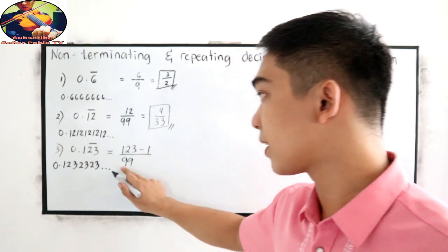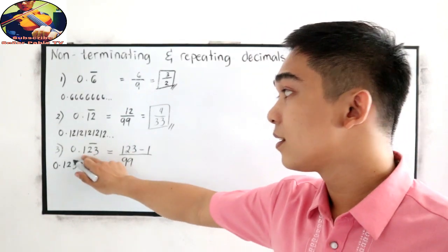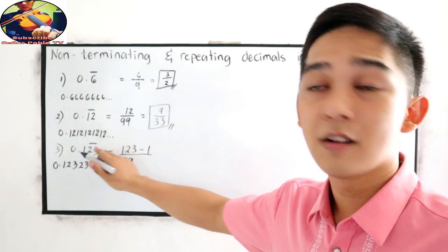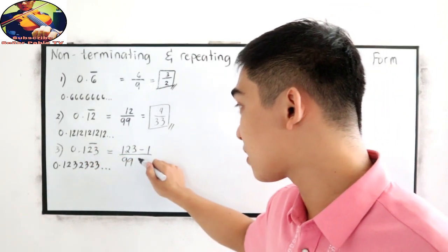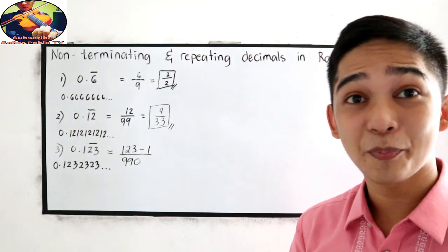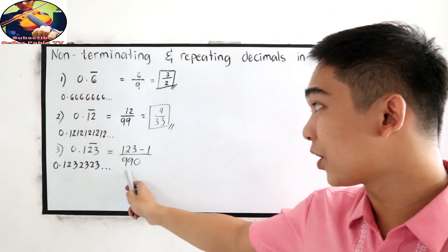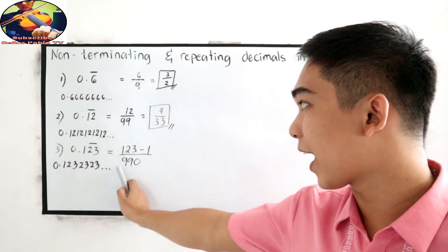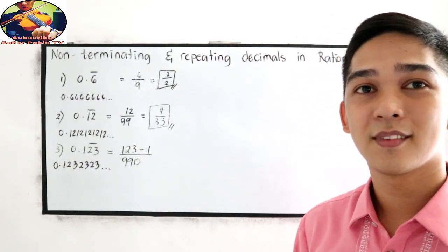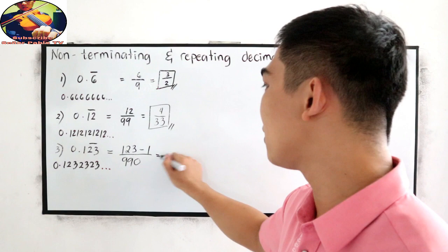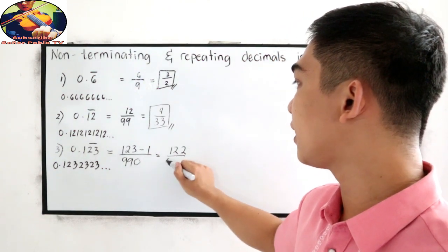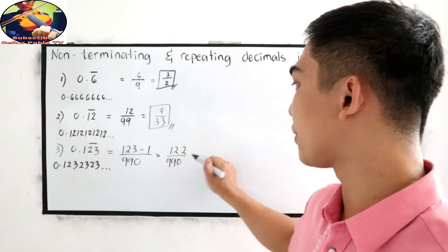So copy 123, subtract 1: that gives us 122. For the denominator, we have 2 digits under the bar, so we write 9, 9. Since 1 is not included in our bar, replace that position with 0, giving a denominator of 990. So we have 122 over 990.